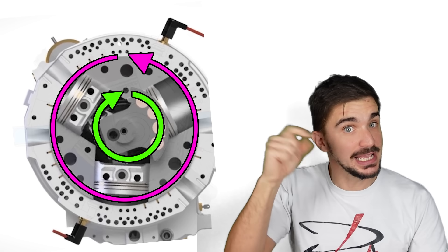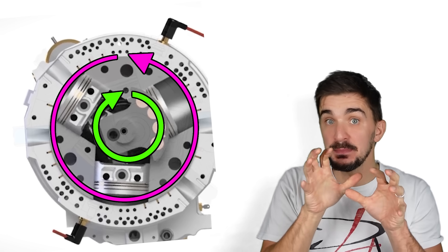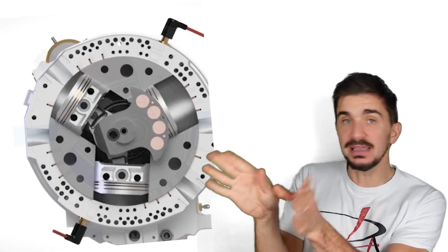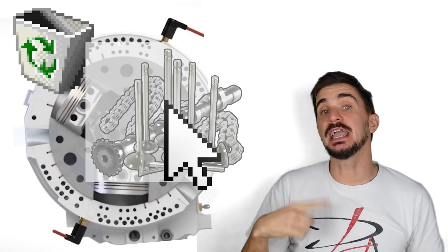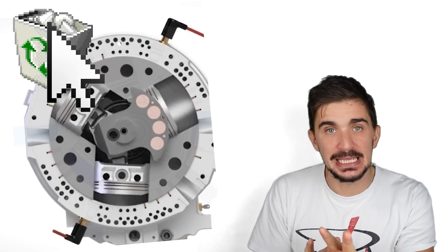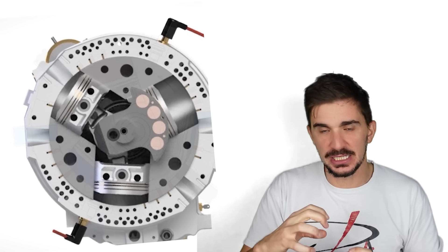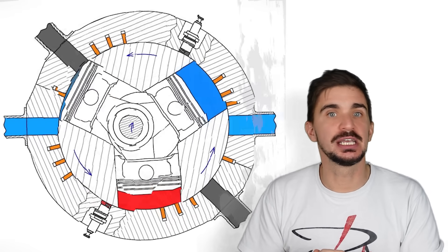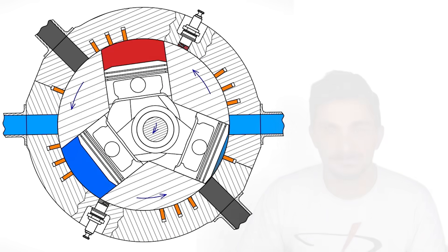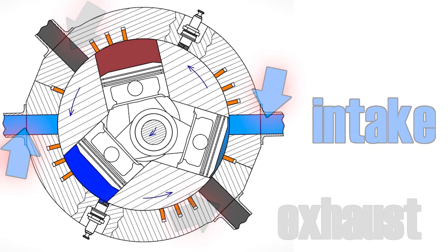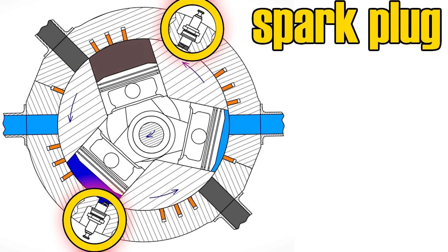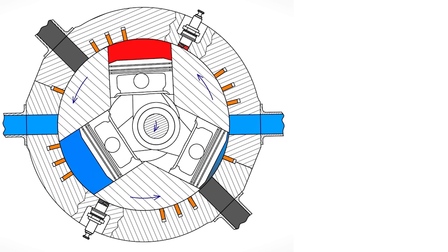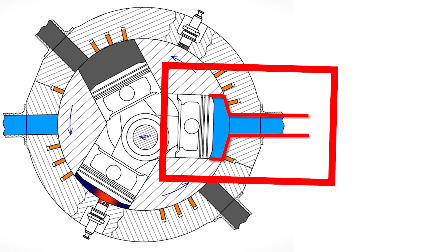Something else that a rotating cylinder block does is that it makes it possible to completely get rid of valves and cams and all of their associated components. If you have a rotating block, all you need are holes in the housing to do intake, compression, combustion and exhaust. Here we have our intake and our exhaust ports. As you can see, they're just holes in the housing. And here we have our spark plug. As the cylinder travels,